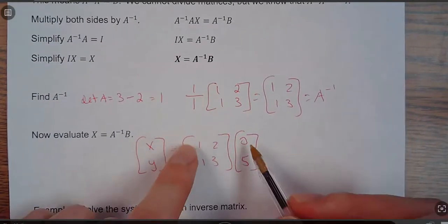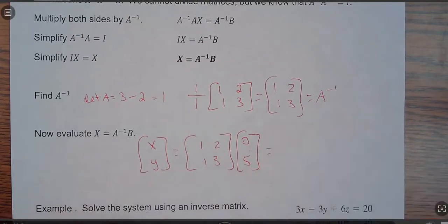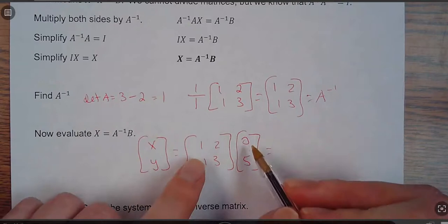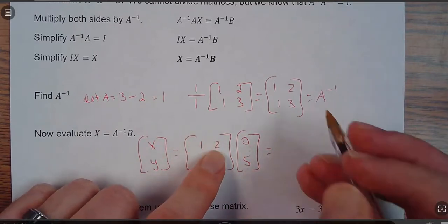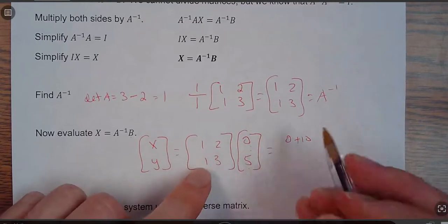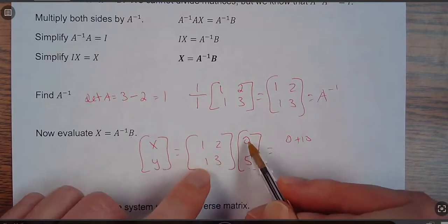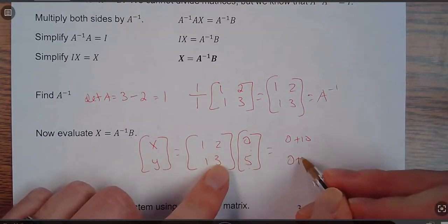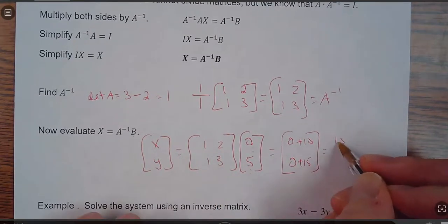So I need to multiply these two matrices together, the answers will be my X. So I've got 0 times 1 is 0, plus 10. 0 plus 10, which is 10. And then 1 times 0 plus 3 times 5, so 0 plus 15.